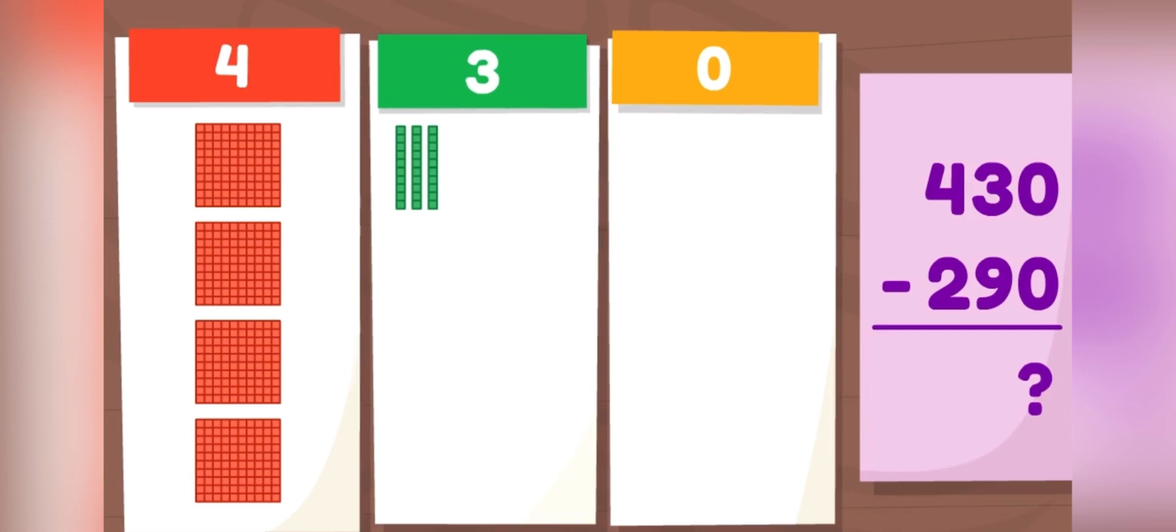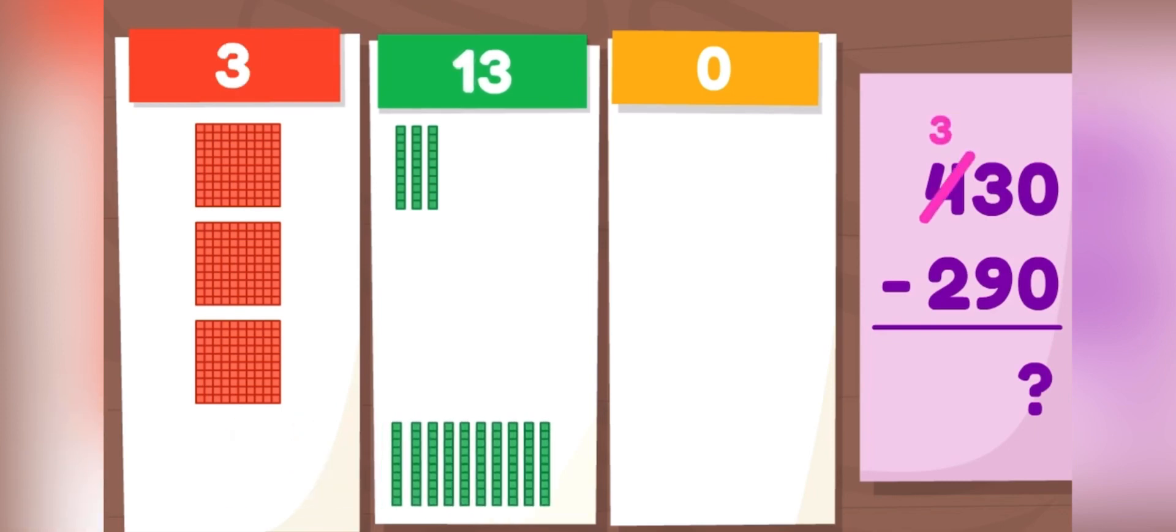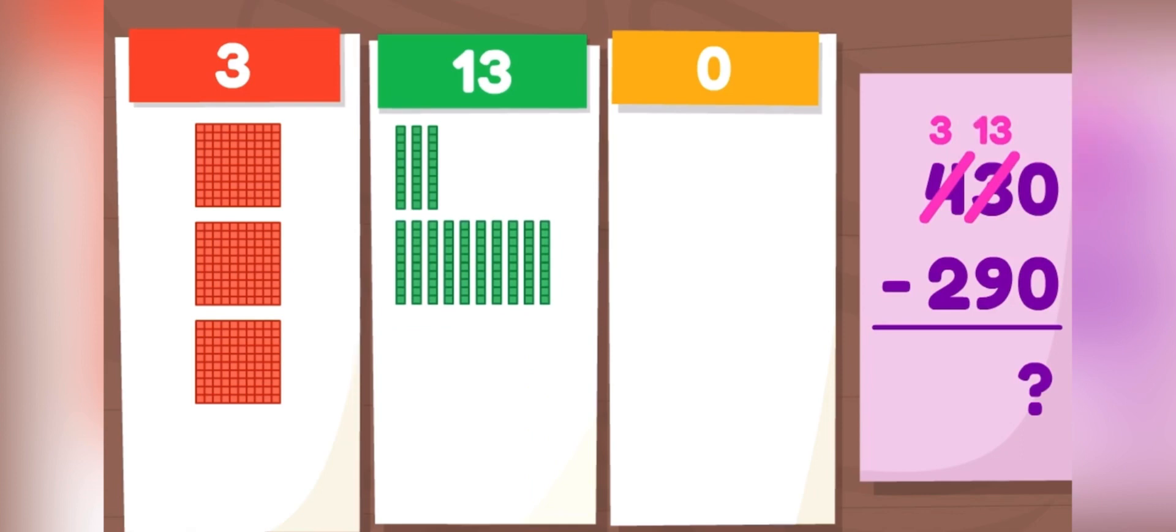First, let's take away the tens. There are nine tens in 290. Whoops! We don't have enough rods to take away nine. Let's change a flat into ten rods, because 100 equals ten sets of ten. Now we can take away nine rods.